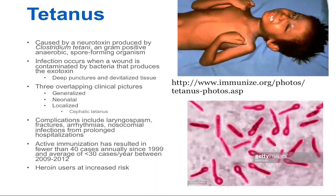There's usually no tissue destruction or inflammatory response, and there's no person-to-person transmission for tetanus — so this is one of the few diseases where you cannot get it from another person. The incubation time ranges from 3 to 21 days and can be longer, and it really depends on the distance of the injury site to the central nervous system.